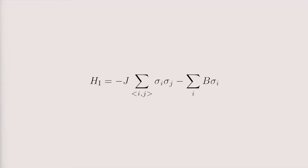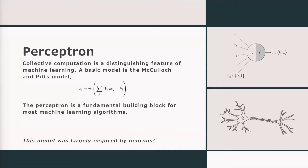So the first place to start is what makes machine learning machine learning. One fundamental feature is its ability to do collective computation, and that's best exemplified by something called the perceptron. Anyone who's done a little bit of machine learning is familiar with the perceptron because it's the individual building block of a fully connected neural network. You have a bunch of inputs that come into a node with some activation function and then you get a singular output. The most basic model is the McCulloch-Pitts model — it's essentially a weight matrix times some vector plus a bias term, just like a normal fully connected neural network, but focusing on a single neuron.